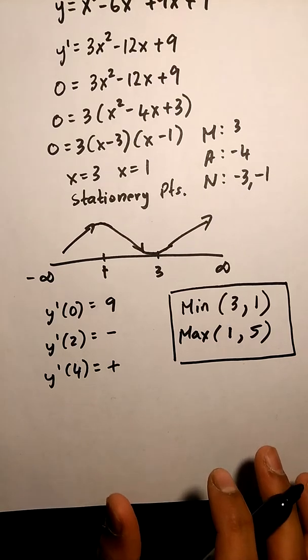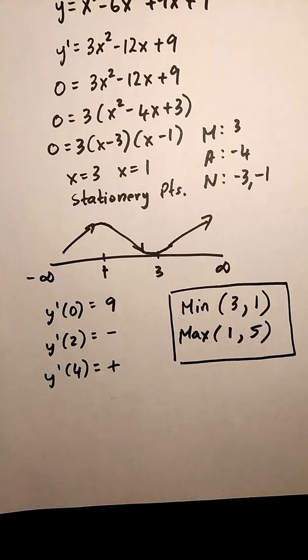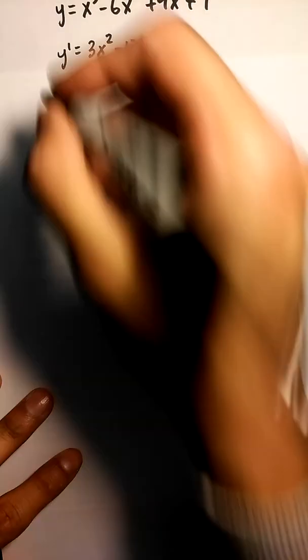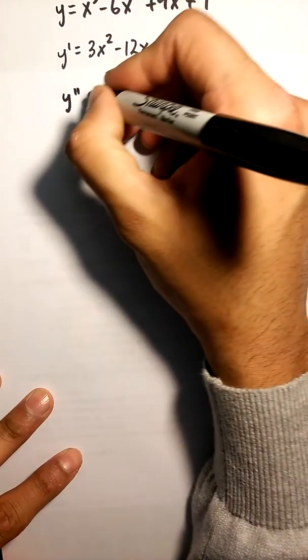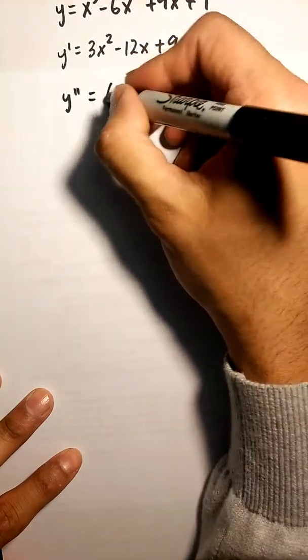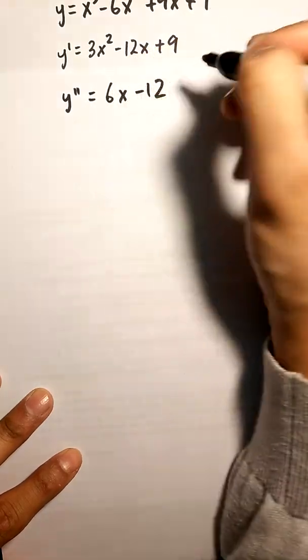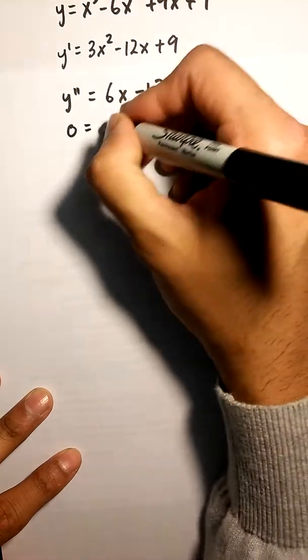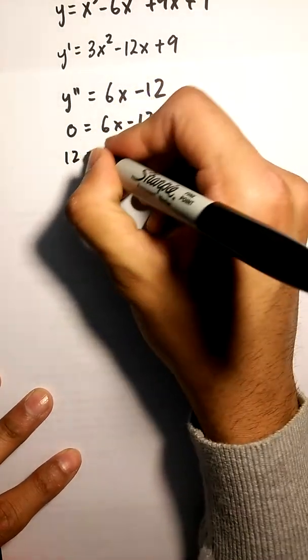Okay, next we got to do the intervals of concave up and concave down, so I'm going to double derive my equation, then I'm going to make this equal to zero, and then I'm going to solve it.